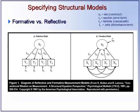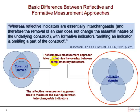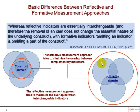In the reflective measurement approach, the aim is to maximize the overlap between interchangeable indicators, which means there should be a high correlation between the indicators. Contrary to that, in the formative measurement model, the aim is to minimize the overlap between complementary indicators — in other words, the indicators in the formative model are very distinct from each other.